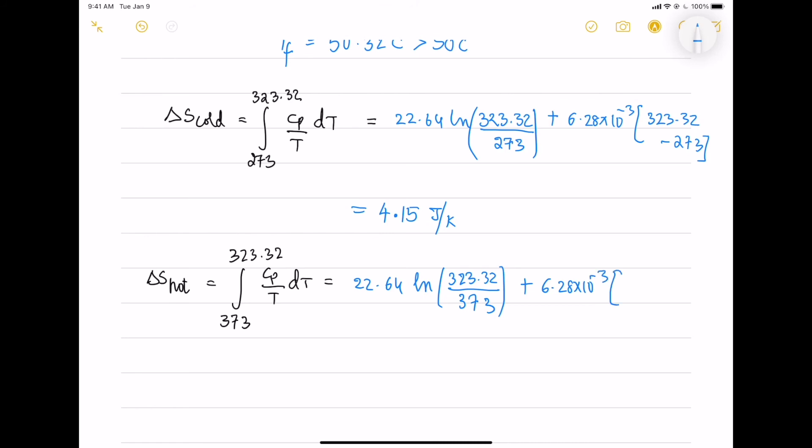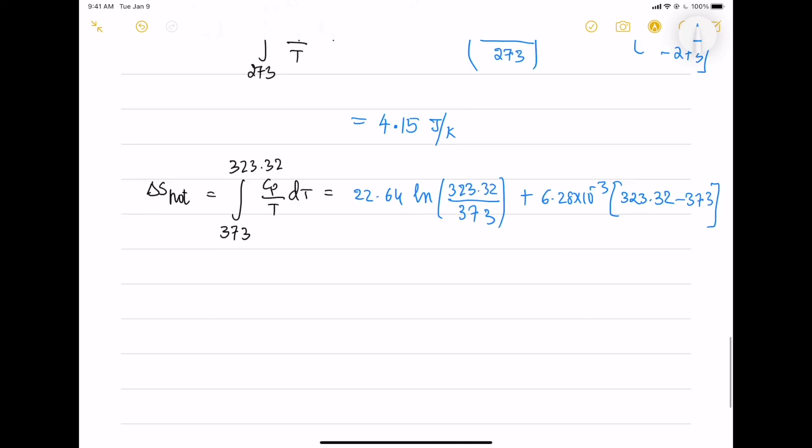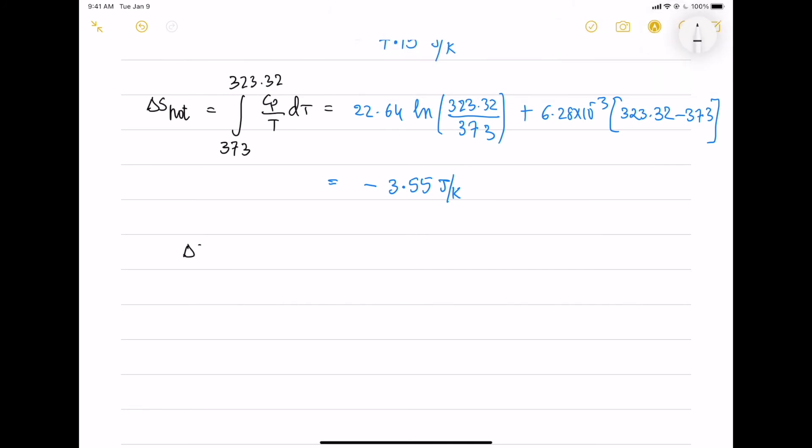And the cold, there is temperature increase, so it is positive entropy. And hot, there is temperature decrease, there is negative entropy. And if you sum these entropies, you get the delta S irreversible as 0.6 Joule per Kelvin.